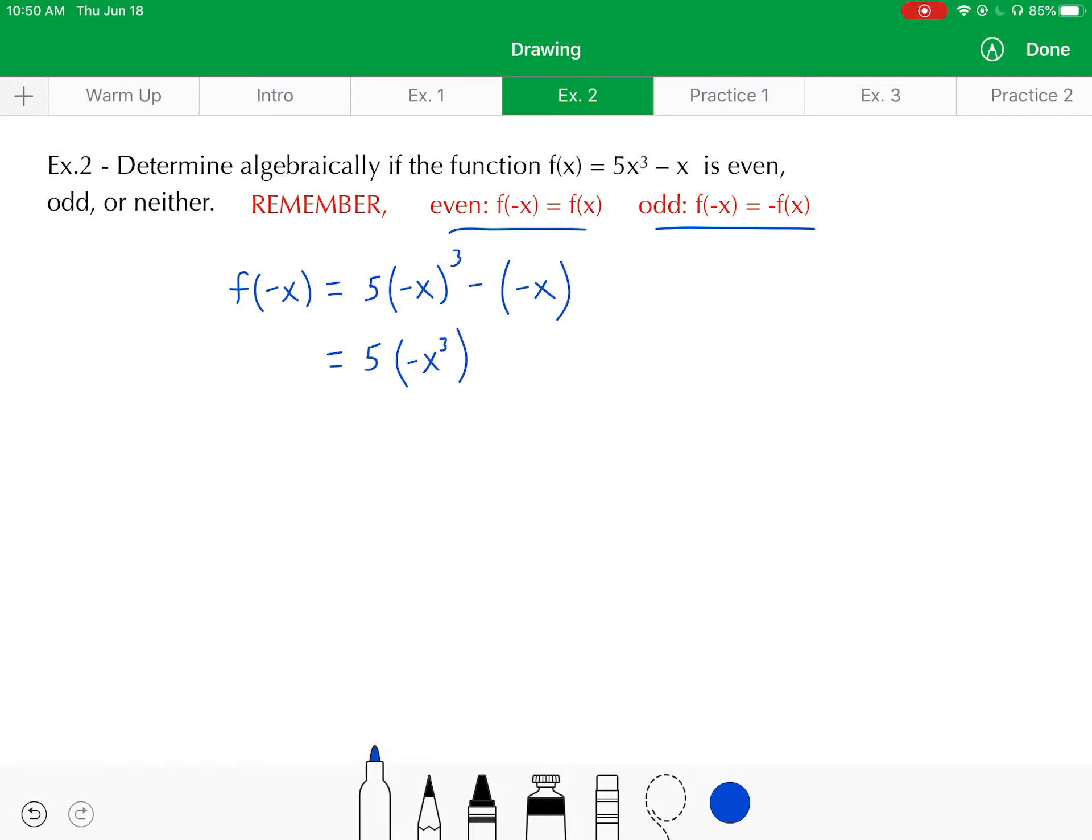And then at the same time, I'm going to say that subtraction by negative x is the same as addition of x. Then lastly, 5 times negative x cubed, I can say that that is negative 5x cubed. And that's as simplified as that function gets.